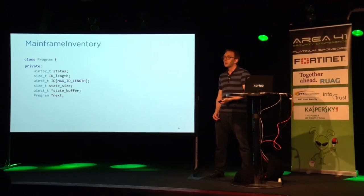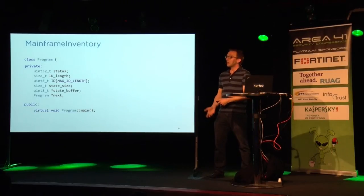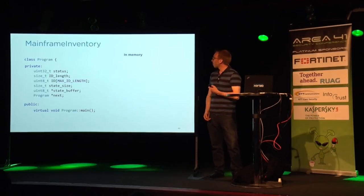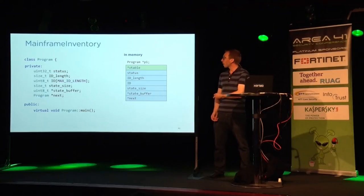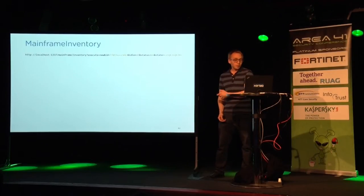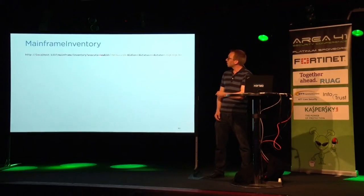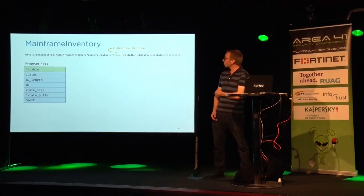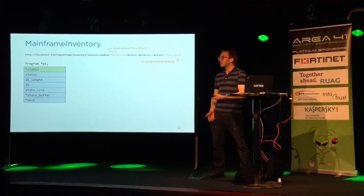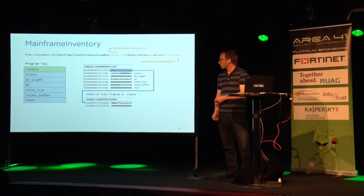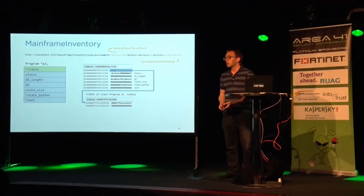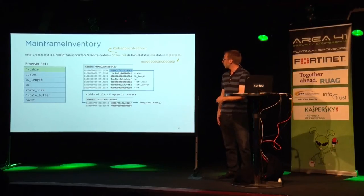And of course there is a fancy method which is by accident virtual. In memory this looks like: we have the object P1, a pointer to the V-table of the program, and then the attributes follow. An example request would create a new program object with a specific ID and specific state that we can define as a client. There's a pointer to the V-table of the program — importantly, this V-table is located in the read-only data section of the executable. The first entry of the V-table is the program's main method.